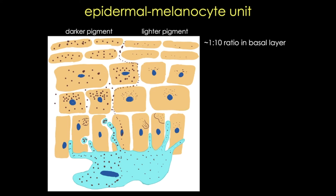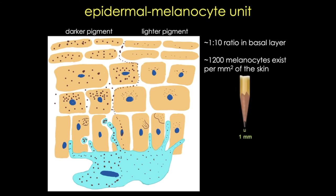The ratio of melanocytes to keratinocytes is about 1 to 10 in the basal cell layer. There are actually around 1,200 melanocytes per square millimeter of skin. To put that in perspective, if you consider that the tip of a very sharp pencil is about 1 millimeter, this means that if you draw a period at the end of your sentence, roughly 1,200 melanocytes would fit in that period.